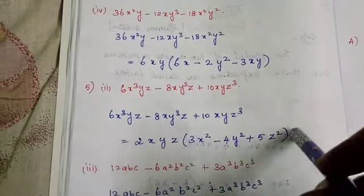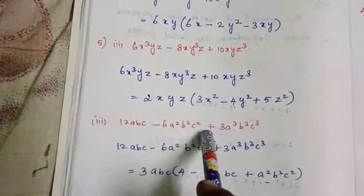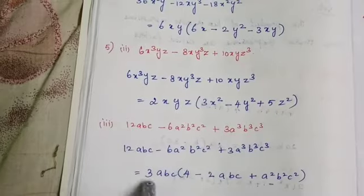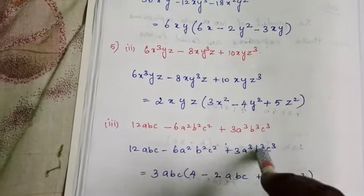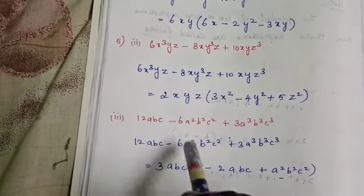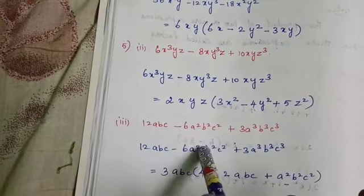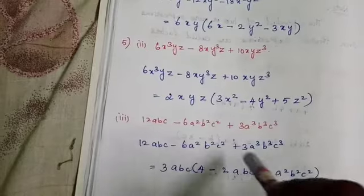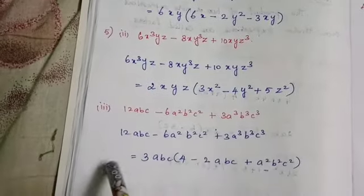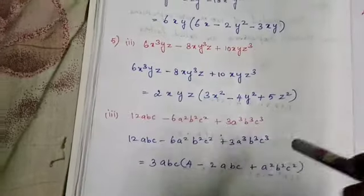Last problem: 12abc - 6a²b²c² + 3a³b³c³. The coefficients 12, 6, and 3 all have 3 as common. For each variable a, b, c — the smallest powers are a, b, c respectively, so take out abc. Common factor is 3abc. Remaining: 12 ÷ 3 = 4, abc taken out; 6 ÷ 3 = 2, one abc taken from a²b²c² leaves abc, so -2abc; 3 ÷ 3 = 1, abc taken from a³b³c³ leaves a²b²c². Answer: 3abc(4 - 2abc + a²b²c²).